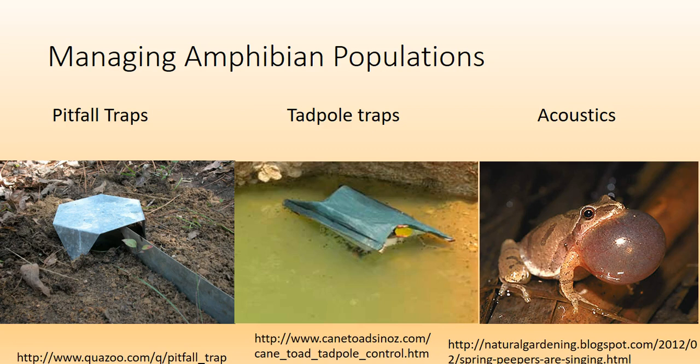For amphibians, there are some interesting monitoring methods. A pitfall trap works because many salamanders follow along a line and just fall right in. You can also catch tadpoles. Acoustics is another approach — a researcher created software to identify different species present by their calls, so the software could detect a spring peeper versus a bullfrog, for example. It can't tell you numbers, but it can tell you species present in different locations.